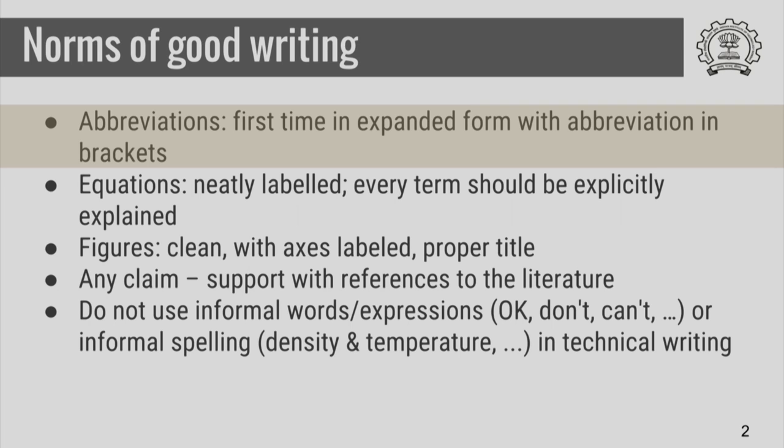Welcome. In this module we are going to talk about some good writing norms. One of the things that you should do is that if you are using abbreviations, the first time they appear they should appear in expanded form and the abbreviation should be shown in brackets. Without doing that you should never use abbreviations, and after you have done it for the first time, then later you can use the abbreviation.